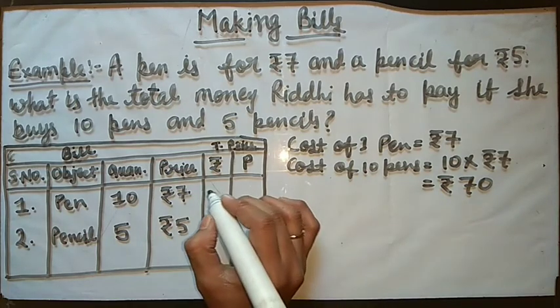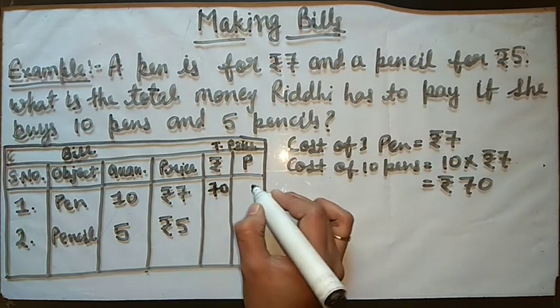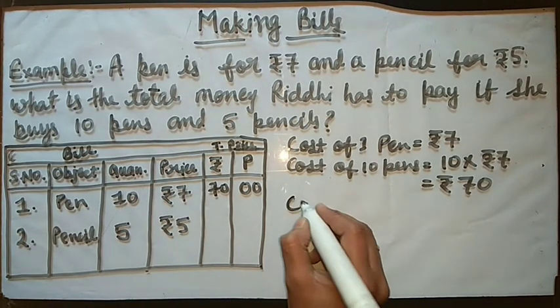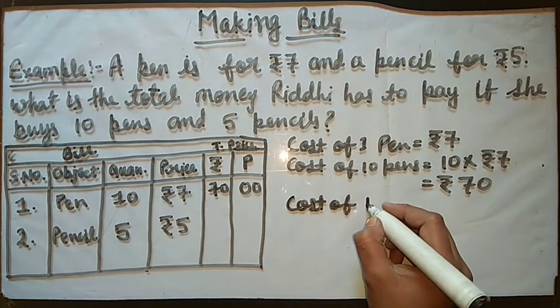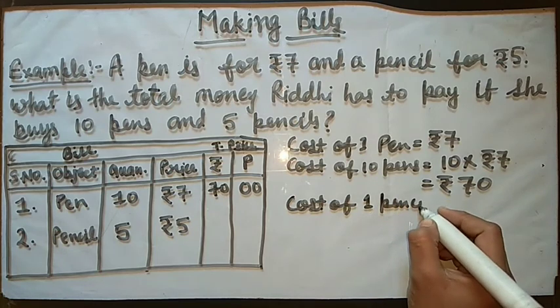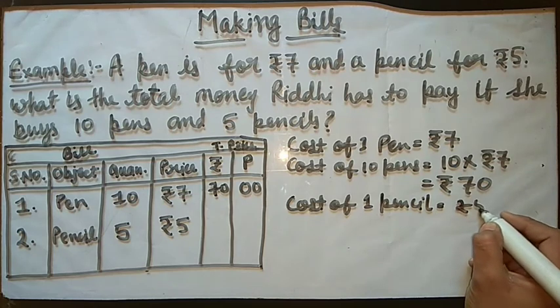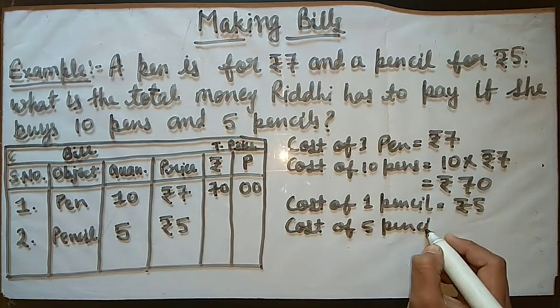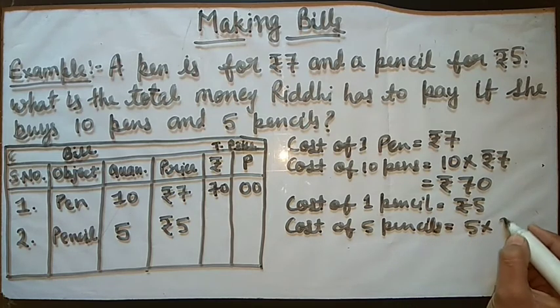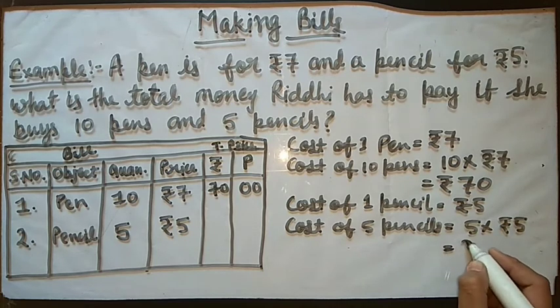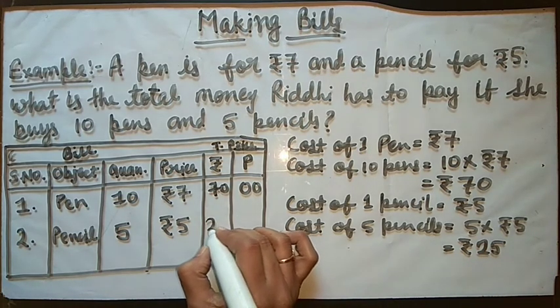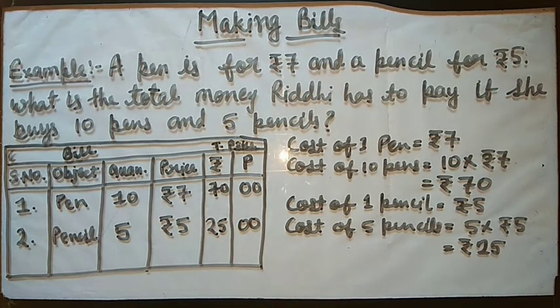We will write here 70 and 0. Now pencil, cost of 1 pencil is equal to rupees 5. Cost of 5 pencils is equal to 5 multiply rupees 5. So 5 fives are 25. So our answer is 25. We will write 25 and 0.